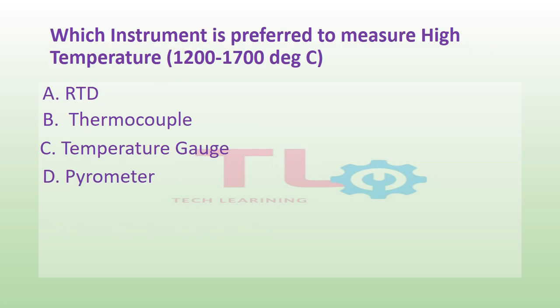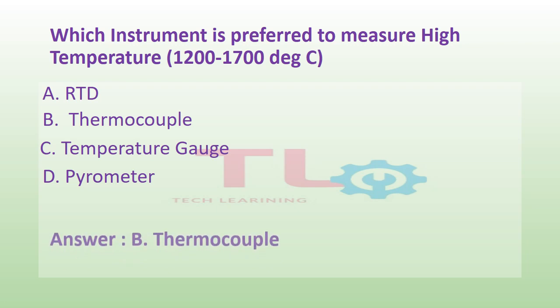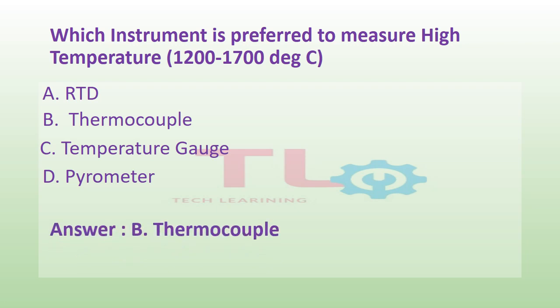Which instrument is preferred to measure high temperature in the range of 1,200 to 1,700 degrees Celsius? Option A: RTD. Option B: thermocouple. Option C: temperature gauge. Or option D: pyrometer. And the answer is option B, thermocouple.